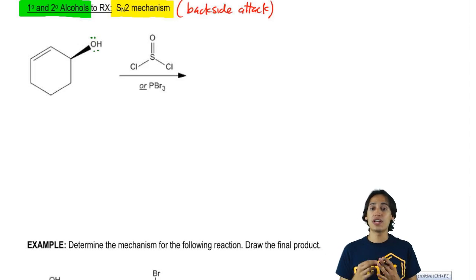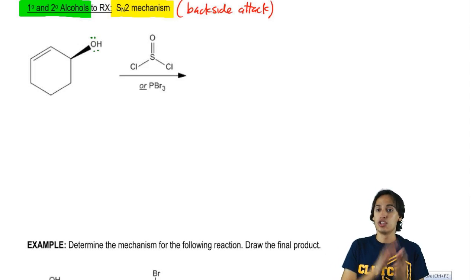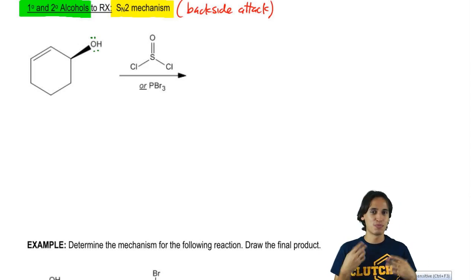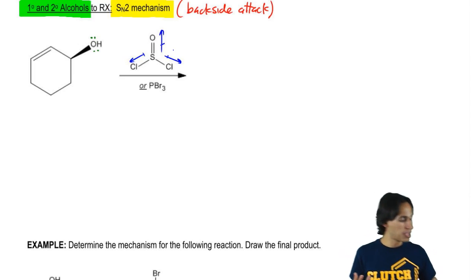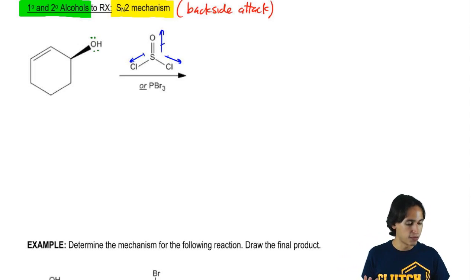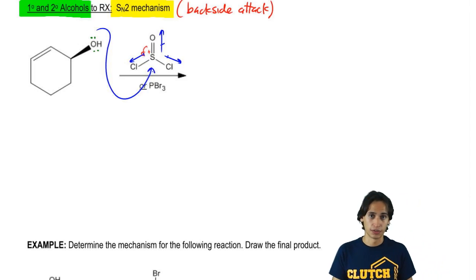In other words, which one has the biggest partial positive charge that would be attracted to the negative charge of the oxygen? If you draw dipoles, it becomes clear that you have dipoles pulling in all directions away from the sulfur. This means the sulfur will have a very significant partial positive charge, so my arrow starts from my oxygen and attacks the sulfur.